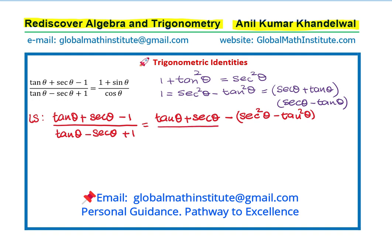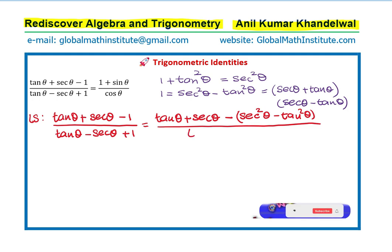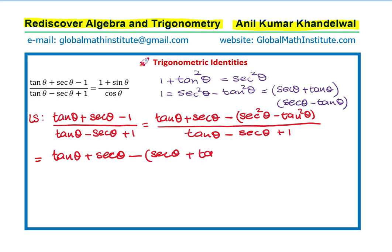And later we will factor and then take tan θ + sec θ as common. You see how one step follows into the other. So appreciate each move. We will now write this as tan θ + sec θ minus, factor it as (sec θ + tan θ)(sec θ - tan θ).